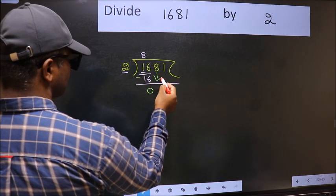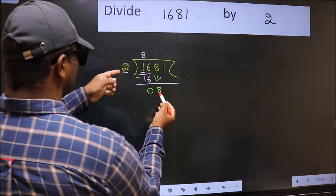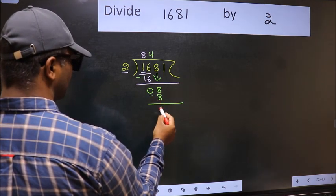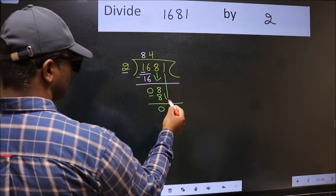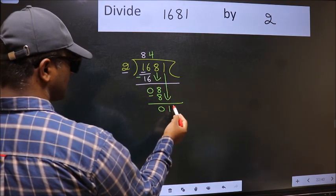After this, bring down the beside number 8 down. When do we get 8 in 2 table? 2 times 4 is 8. Now we should subtract, we get 0. After this, bring down the beside number, so 1 down.